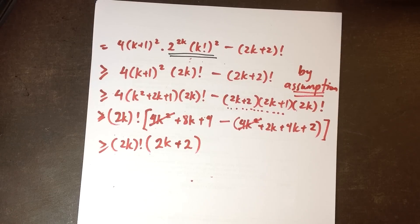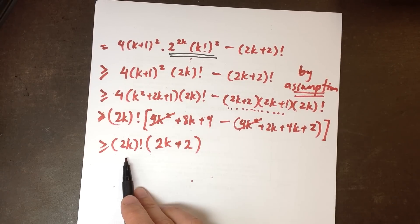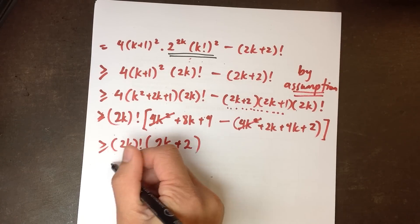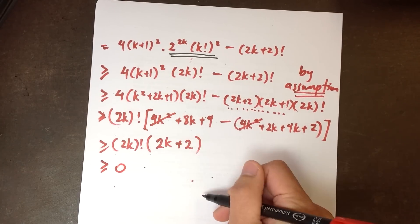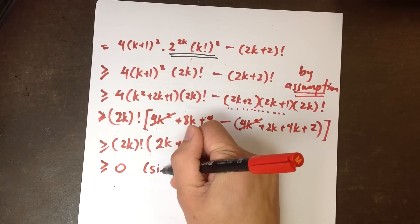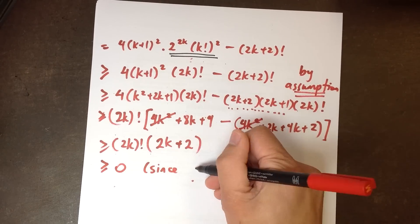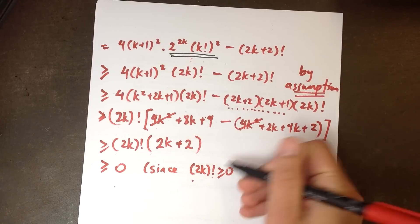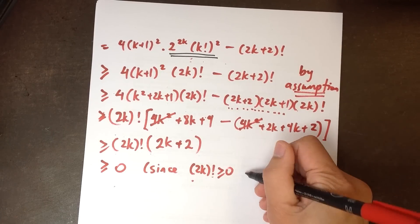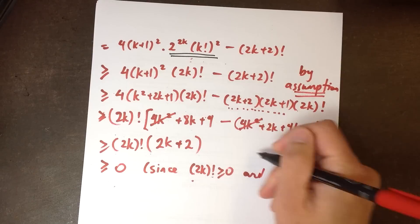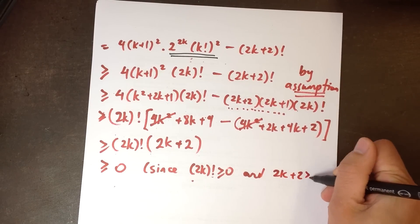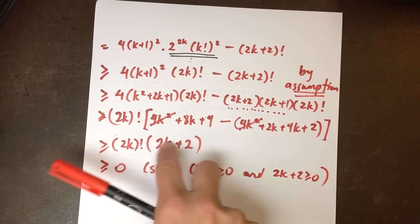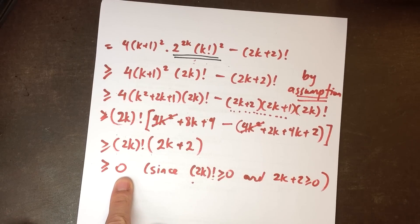What have I established? I've got this result at the end. All of this must be greater than 0, since 2k factorial is going to be positive — k is positive so 2k plus 2 is also positive. If you're multiplying together two positive numbers, the product will also be positive. So that's why I can say the whole thing is positive.